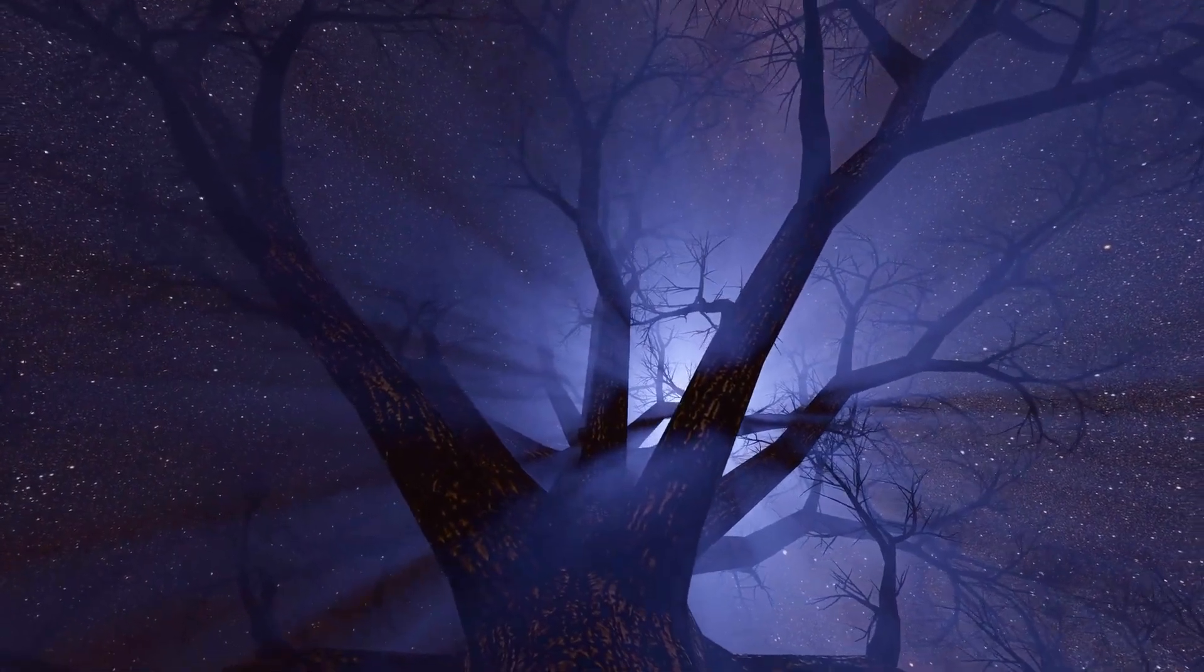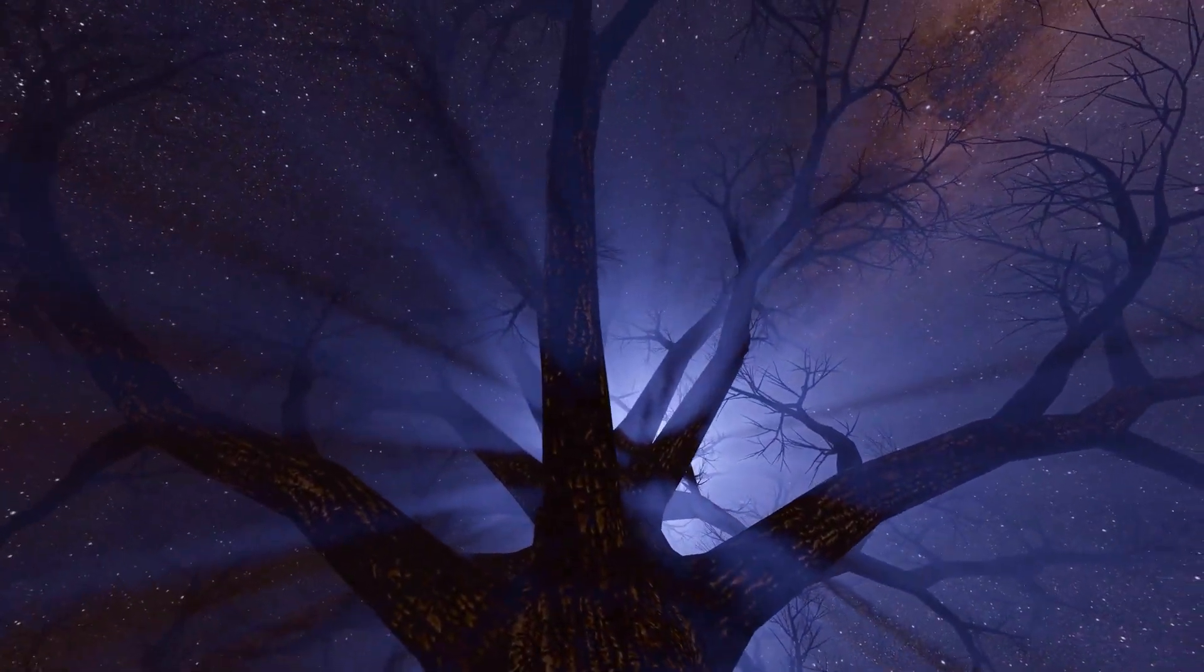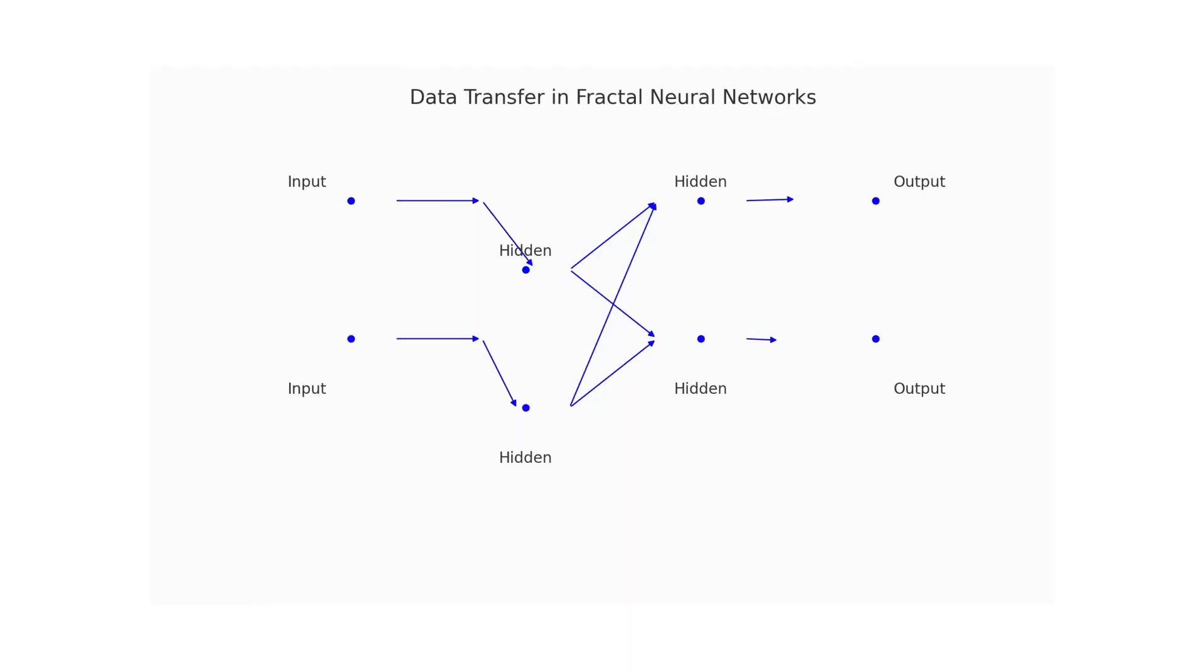Similarly, a fractal neural network has layers, with each layer mirroring the structure of the entire network. Now, let's visualize the journey of data in this network. When the input data is fed into the fractal neural network, it's processed differently at every layer, much like going through different small networks. The network then uses these processed inputs to make predictions and adjustments, resulting in the final output.